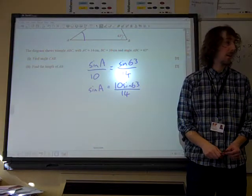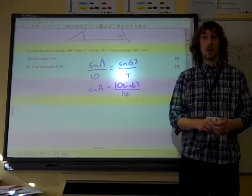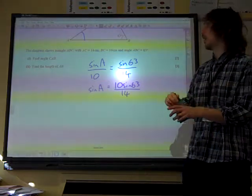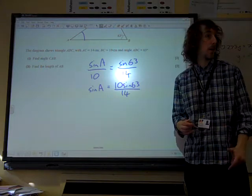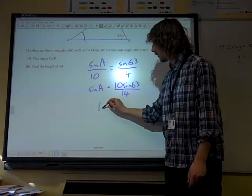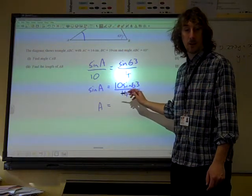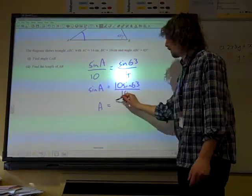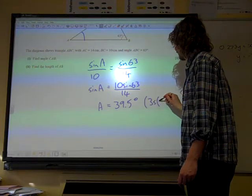We're going to use the calculator to evaluate that and then do inverse sine. We don't need to do anything else with it because we're pretty sure it's going to be an acute angle so we don't worry about other values. That gives us, if we do inverse sine of that value there, 39.5 degrees to 3 significant figures.